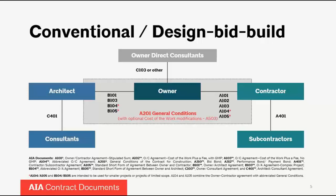Sometimes an owner will engage other types of consultants directly. Those consultants may inform some aspect of the project, either in the design or provide some influence to the design. For example, the owner might engage a cost estimator. Oftentimes the burden to supply surveys is on the owner; civil engineers are often owner-direct consultants, separate and apart from the architect and its design consultants. That all happens usually in the design phase before construction starts.